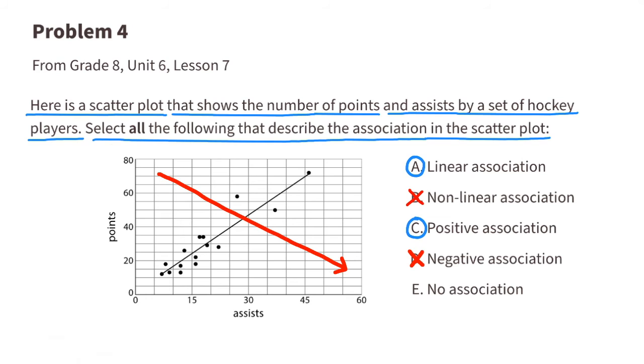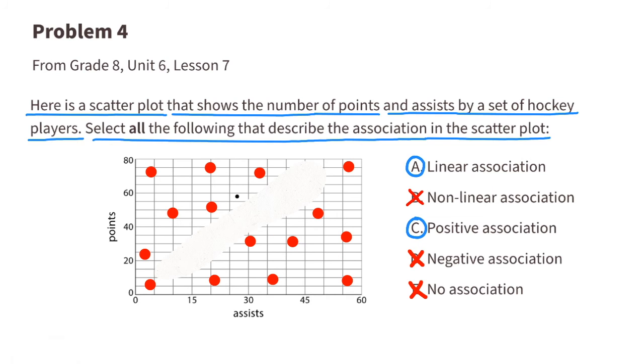If there were no association, the scatter plot would look like this, with data points spread all across the scatter plot with no pattern at all.